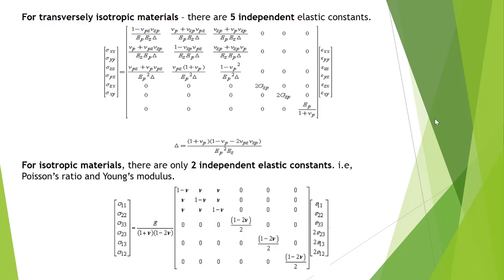In transversely isotropic, the physical properties are symmetric about an axis perpendicular to the plane of symmetry. Here in this example, the plane of symmetry is considered to be xy, so we consider Ep equal to Ex equal to Ey, and z is the direction axis perpendicular to xy.